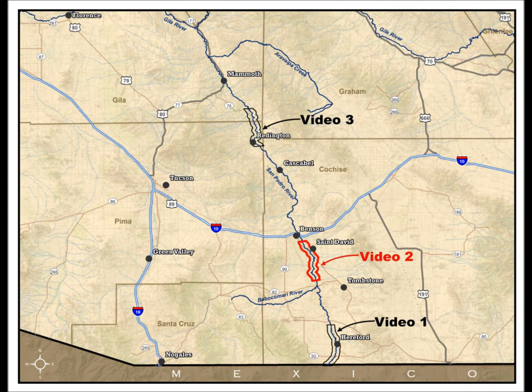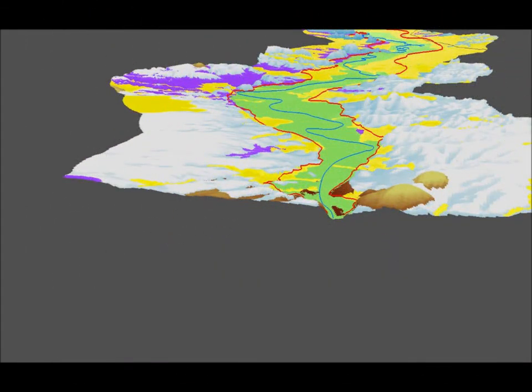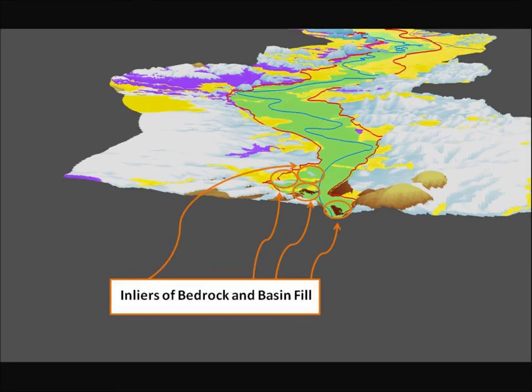The second animation is located in the central portion of the basin. It begins approximately three miles north of Fairbank where the floodplain exits a narrow reach through bedrock. It ends just south of where Interstate 10 crosses the San Pedro River at Benson. In the foreground of the animation is bedrock, colored in brown. A bit north are inliers marked with brown circles of both bedrock and basin fill surrounded by floodplain Holocene alluvium. To the north, the river meanders back and forth across the floodplain and the edges of the floodplain are obvious.